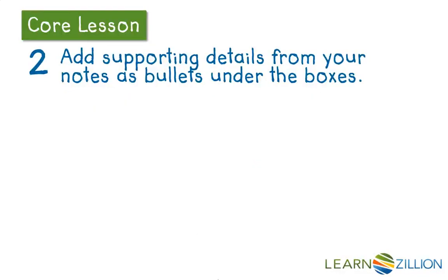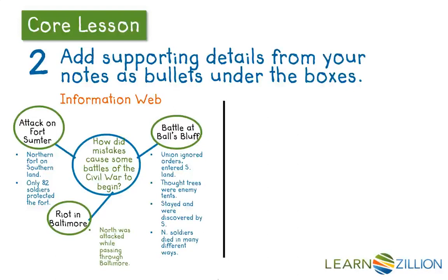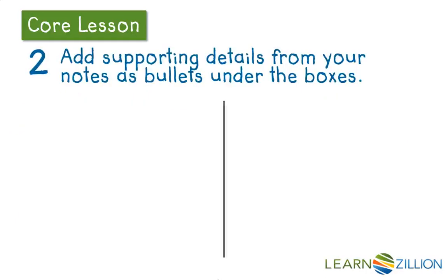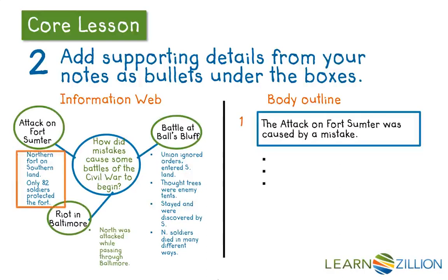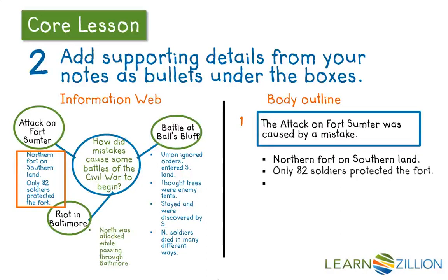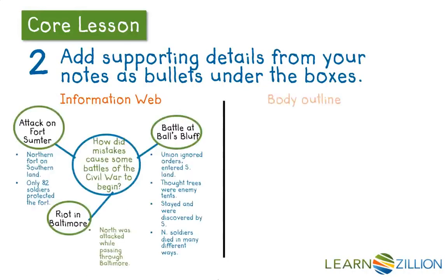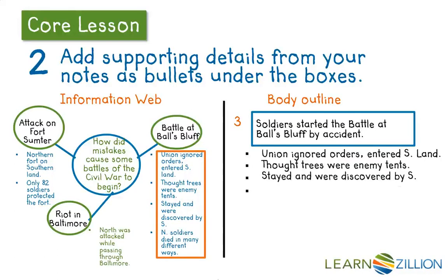Then add supporting details from your notes as bullets under the boxes. I'm going to look at my information web because I have notes under each category to put as bullets under my boxes. My first body paragraph corresponds to the notes on the attack on Fort Sumter. My second body paragraph corresponds to the notes on the riot in Baltimore, and my third body paragraph corresponds to these notes here. I'll add the Fort Sumter notes as bullets under that box, do the same with the second and third body paragraphs, and transfer all four notes as bullet points. It's that simple — just transfer your notes into your body outline.